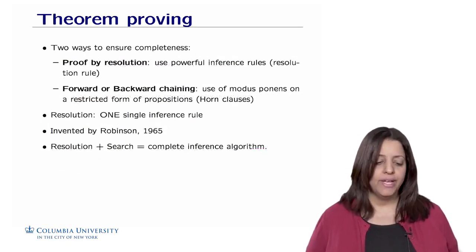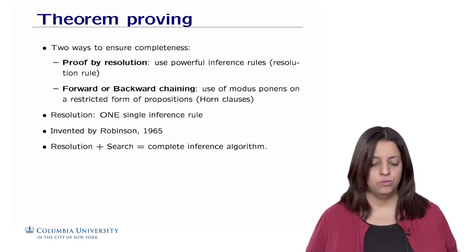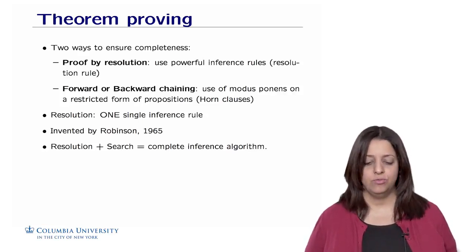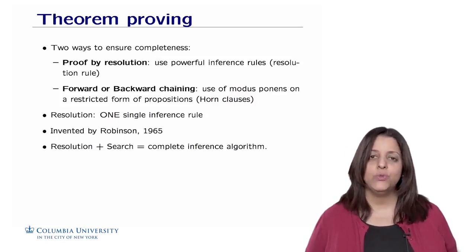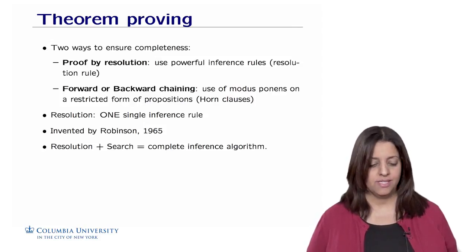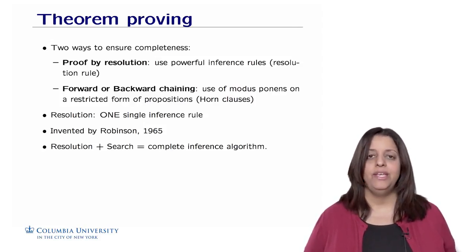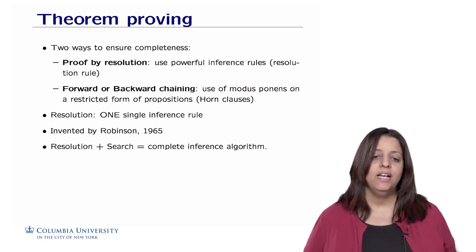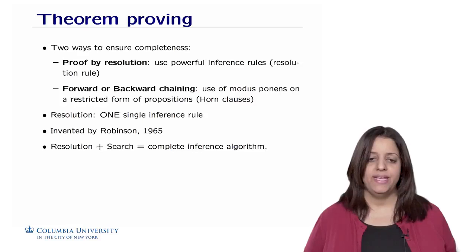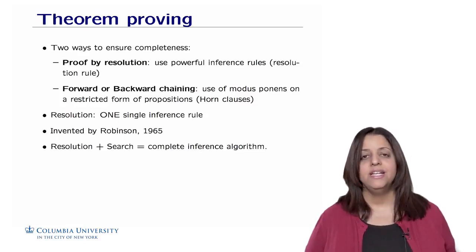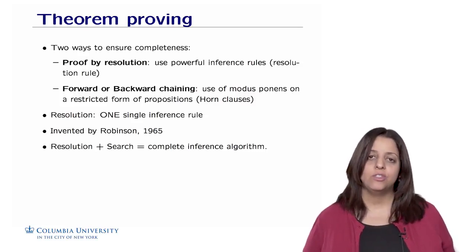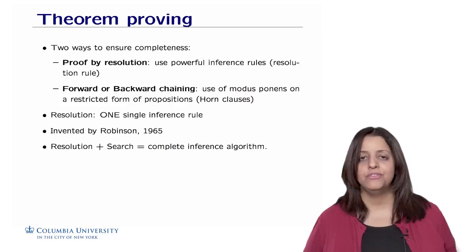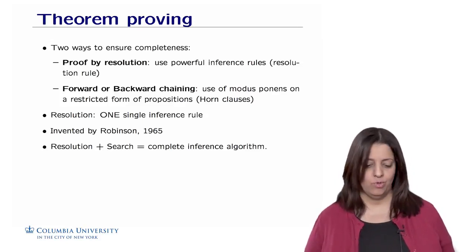In propositional logic, there are two ways to ensure completeness. One is called proof by resolution, using a powerful inference rule called the resolution rule. The second is called forward or backward chaining, which uses modus ponens on a restricted form of propositions called Horn clauses. Modus ponens as-is implies a knowledge base expressed as an implication of positive literals — if we can't express the knowledge base in this form, then a complete system with modus ponens alone is not possible.